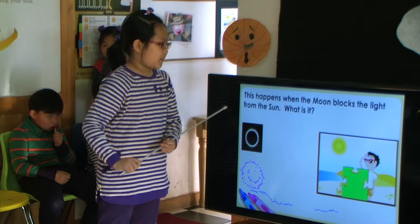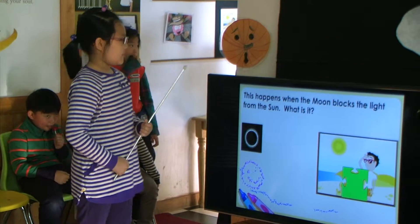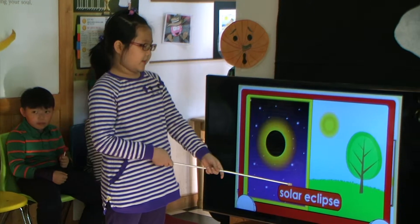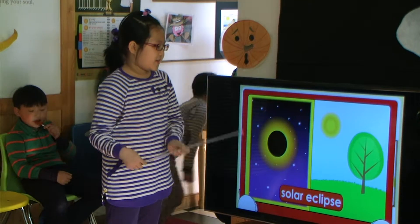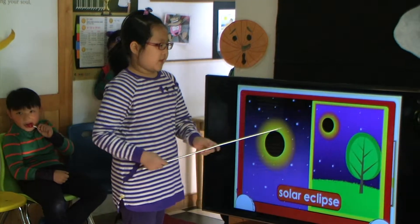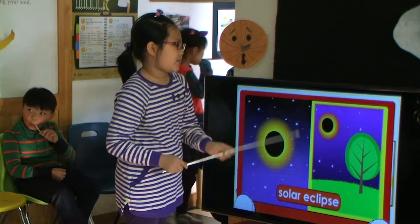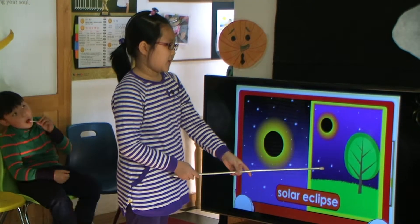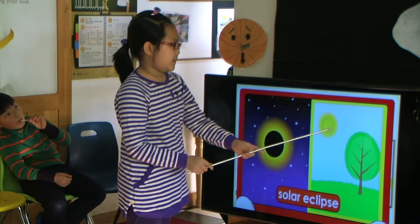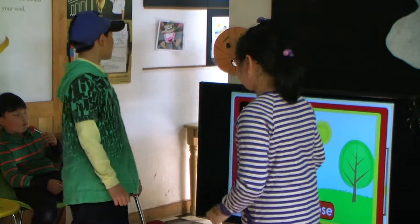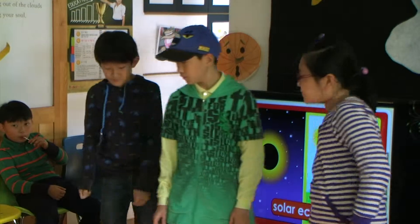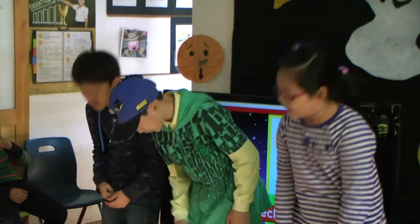This happens when the moon blocks the light from the sun. What is it? A solar eclipse. When the moon passes between the earth and the sun, this is a solar eclipse. During a total eclipse, the sky gets dark and stars can be seen, but the sun can be seen at night. When the moon moves, the sun is seen again. A solar eclipse. Thank you for listening.